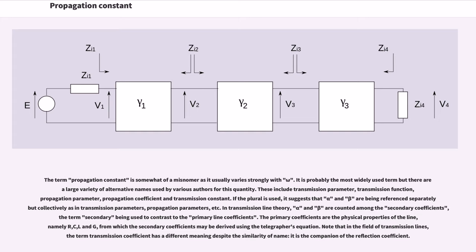The primary coefficients are the physical properties of the line, namely R, C, L and G, from which the secondary coefficients may be derived using the telegrapher's equation. Note that in the field of transmission lines, the term transmission coefficient has a different meaning despite the similarity of name; it is the companion of the reflection coefficient.